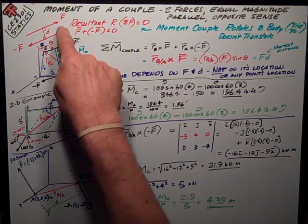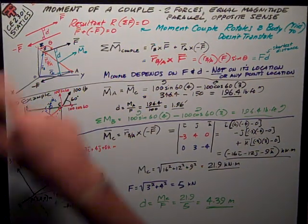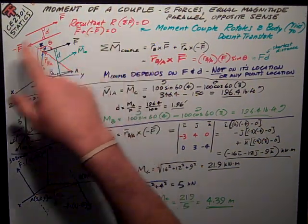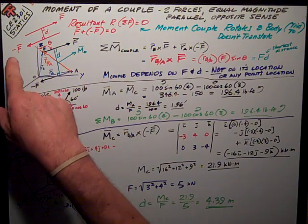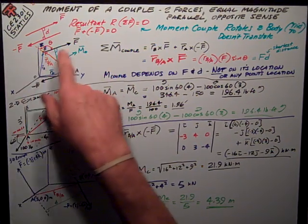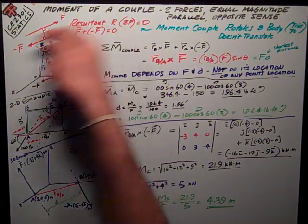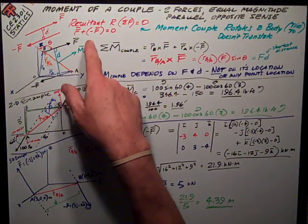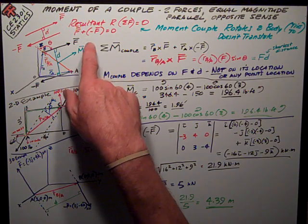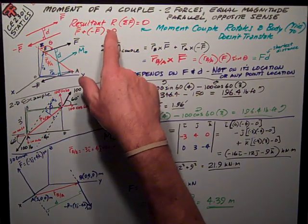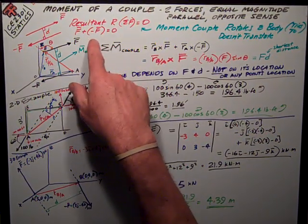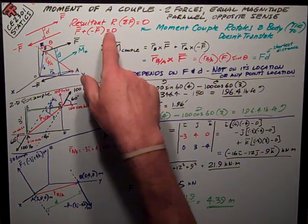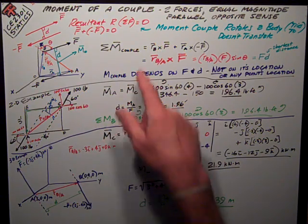A little example here talks about how I've got a force vector F in one direction, negative F in the other direction, and they are parallel to each other, separated by some distance D. The resultant of those two, the sum of the forces, is zero. F plus negative F equals zero, they cancel each other.